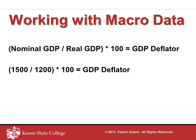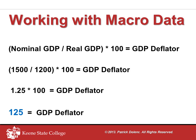With a calculator, or maybe in your head, you can determine that 1500 divided by 1200 is 1.25 — one and one quarter. We're going to multiply 1.25 by 100. Multiplying by 100 is the same thing as moving the decimal two places, and that's why the GDP deflator for year 3 turns out to be 125.